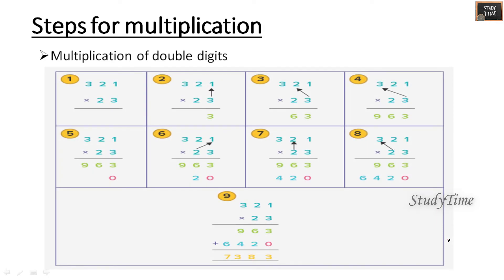This is the step-by-step multiplication. First here, 321 into 23. First you have to multiply with 3, then you have to multiply with 2, then you have to add it here.